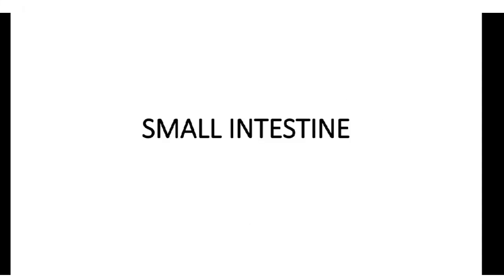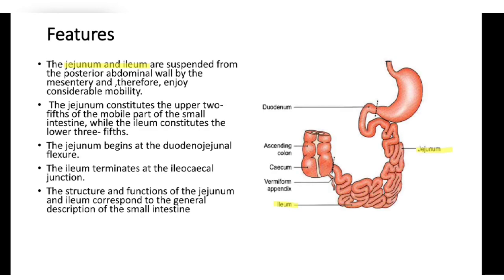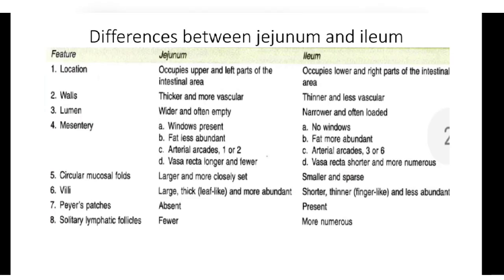The jejunum and ileum are suspended from the posterior abdominal wall by the mesentery and therefore enjoy considerable mobility. The jejunum constitutes the upper two-fifths of the mobile part of the small intestine, while the ileum constitutes the lower three-fifths. The jejunum begins at the duodenojejunal flexure and the ileum terminates at the ileocecal junction.